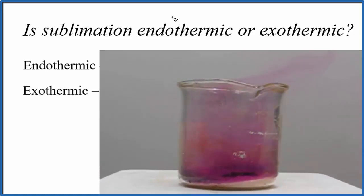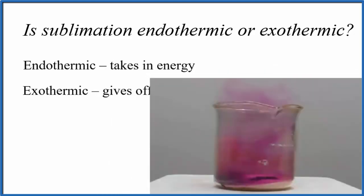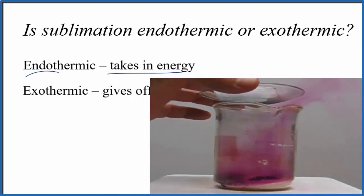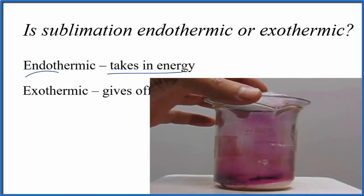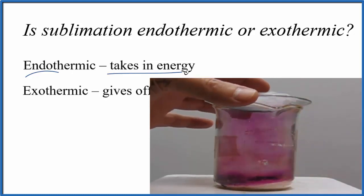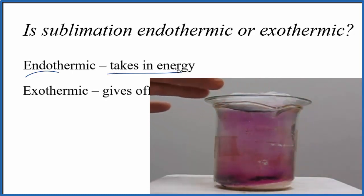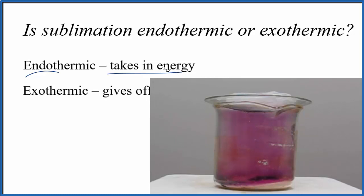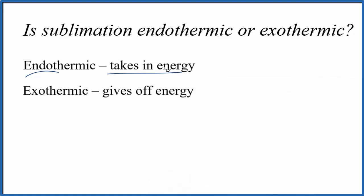Since we had to put energy in to make the sand hot and then make the iodine hot, sublimation is an endothermic reaction. Endothermic reactions take in energy — that hot plate making the sand hot so the iodine sublimes means we're putting in energy to make sublimation take place. We have that iodine solid, and we need to break those molecules apart. They're attracted by intermolecular forces, and we put in heat to break them apart, giving us iodine gas.